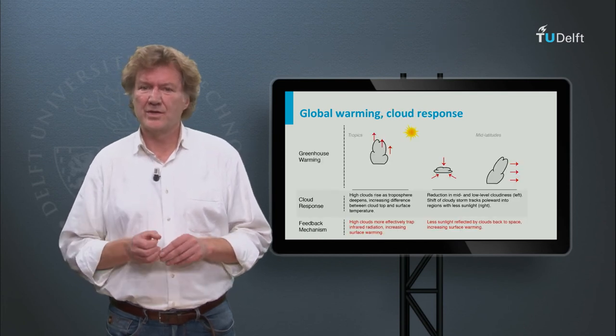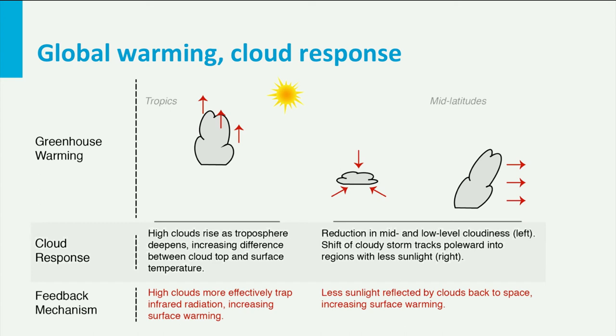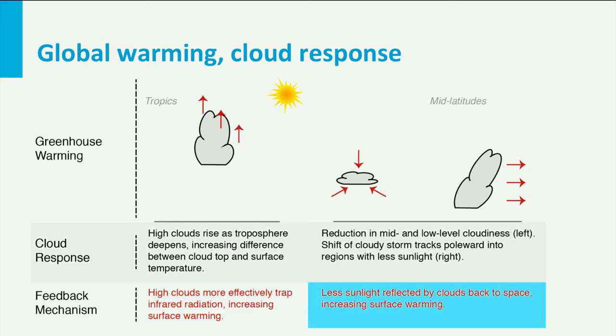So there is considerable uncertainty in how clouds will respond to global warming, but all models agree on one thing: clouds will cool the Earth less than they do now. What are the possible mechanisms? More warming can lead to stronger convection and higher clouds, which trap infrared radiation and warm the Earth — an effect strongest in the tropics. In a warmer environment, low-level cloud decks may become thinner or break up, reflecting less solar radiation into space, so the cooling effect becomes smaller.